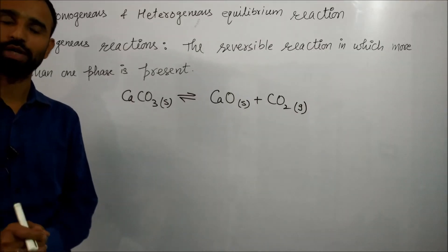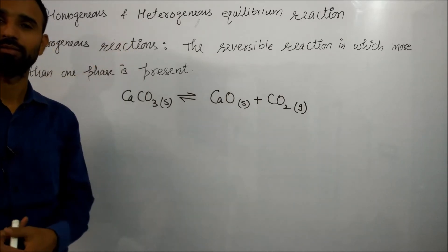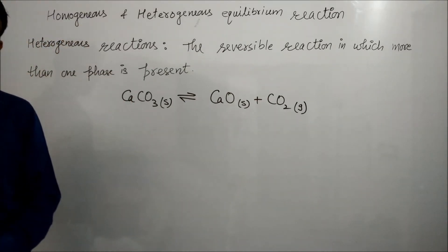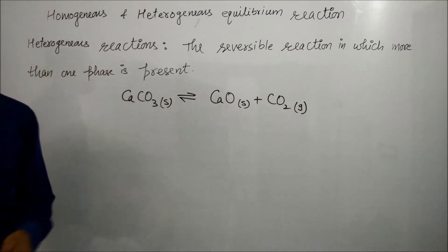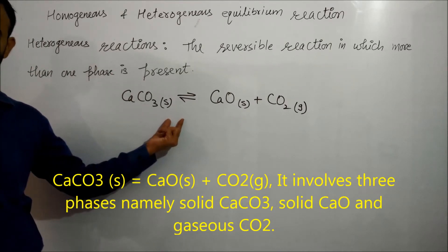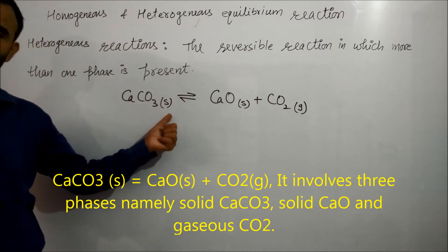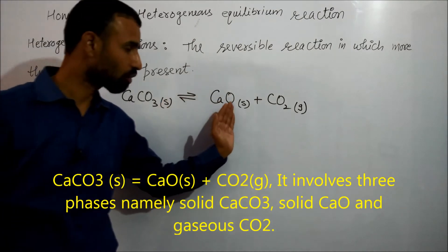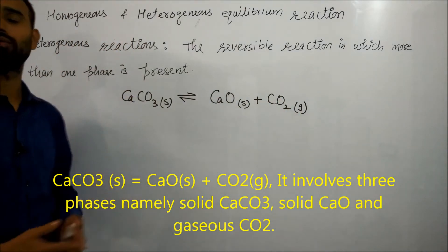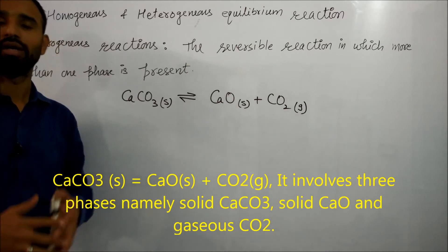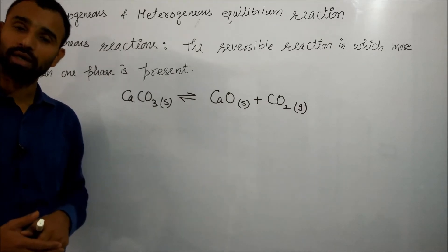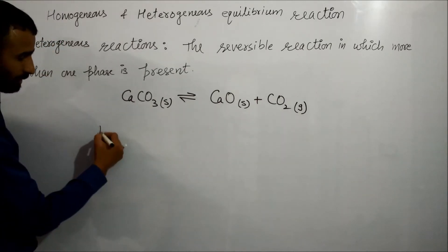Welcome back friends. Today we will learn about homogeneous and heterogeneous equilibrium reactions. Reversible reactions in which more than one phase is present are known as heterogeneous reactions. For example, calcium carbonate is solid. When calcium carbonate decomposes on heating, we get calcium oxide (solid) and carbon dioxide (gas). This is not a homogeneous mixture, so this type of reaction is studied under heterogeneous equilibrium.